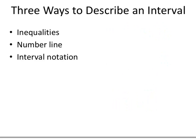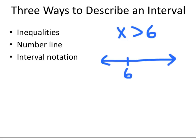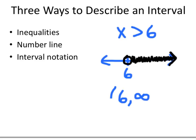Another kind of interval is described by a simple inequality — for example, all numbers x that are greater than 6. On the number line, we draw an open circle at 6 and shade to the right, all the way out to infinity, because we never stop. In interval notation, we write (6, ∞). Infinity isn't really a number, so we never include it with a square bracket — it simply indicates we keep going forever.